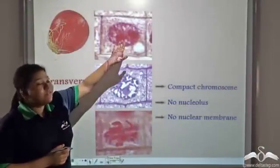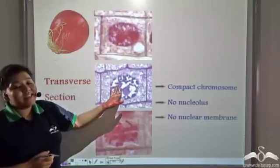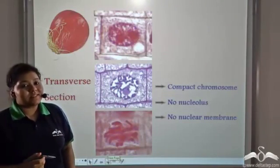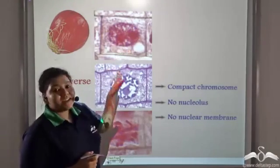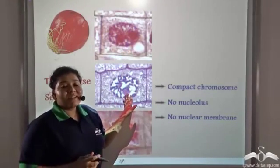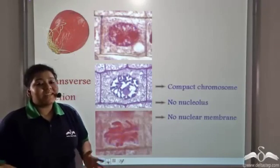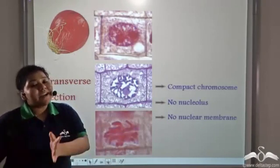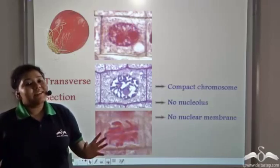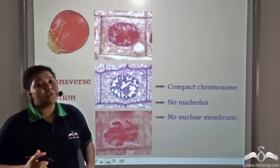Now after interphase, cells should have divided into two daughter cells. But that did not happen. This is because there are other stages in between interphase and the final stage when cells divide to form two daughter cells.